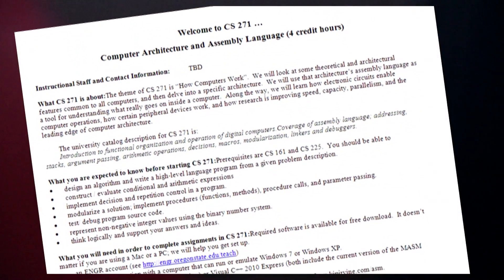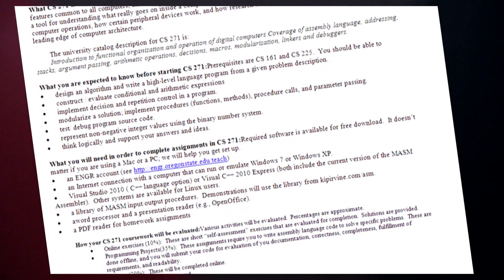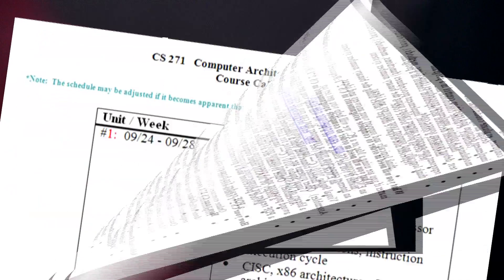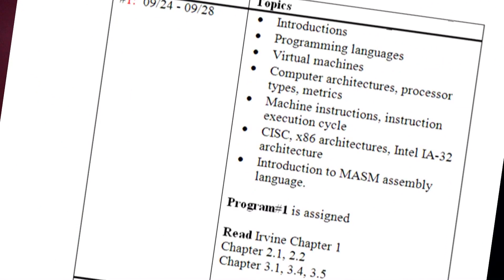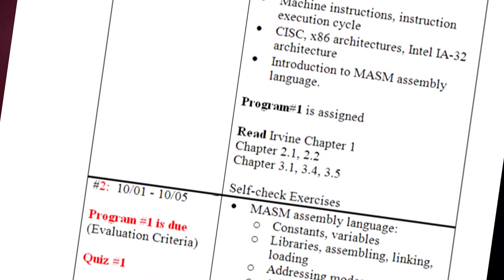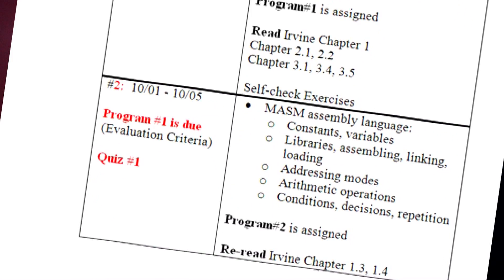Be sure to read the Welcome to CS271 document on the course website. It briefly describes the course, the prerequisites, and the system requirements. There are also links on this week's calendar to the systems you will need for assembly language programming. Be sure to follow the directions carefully, especially when installing the textbook's library. Contact us if you have trouble getting set up.